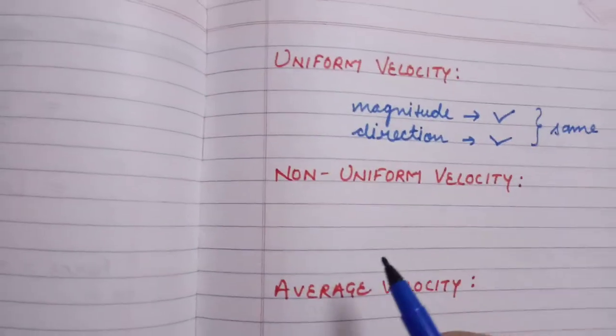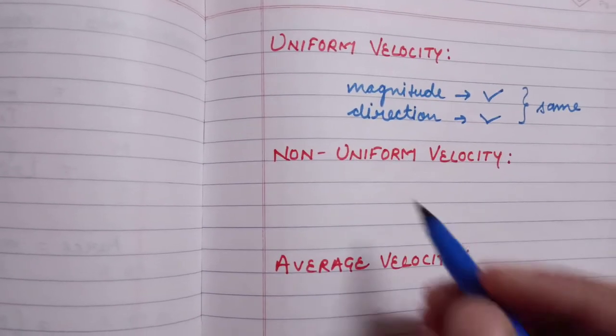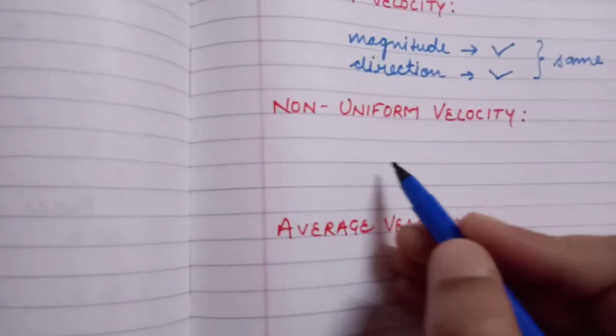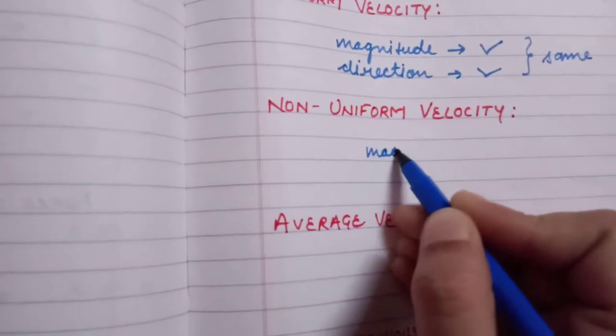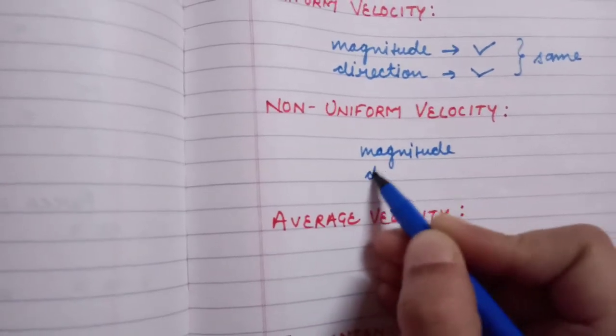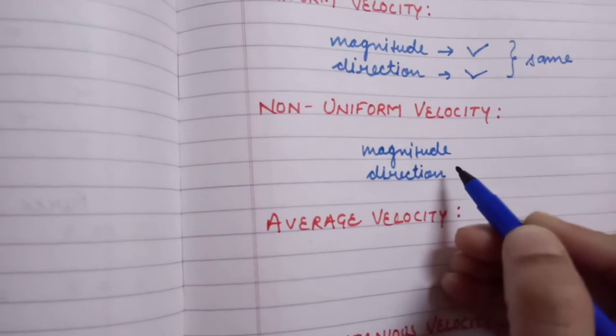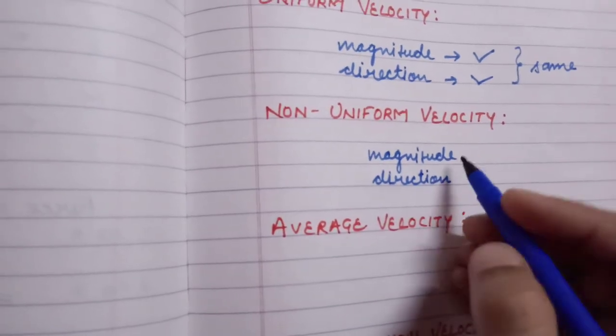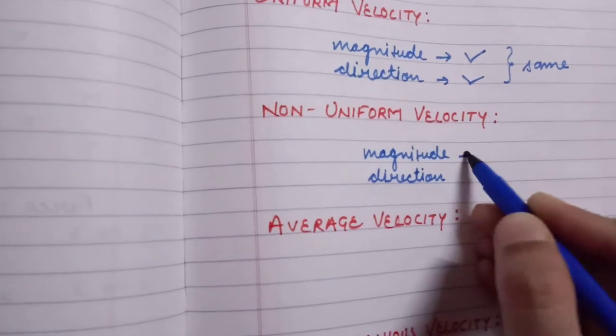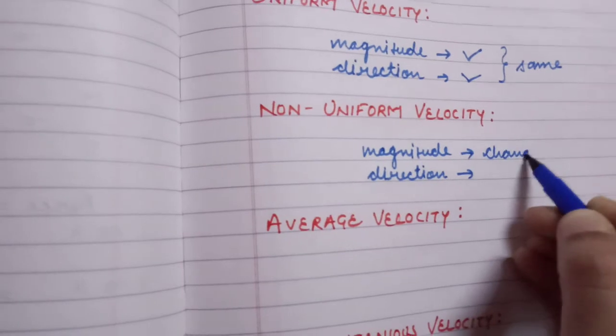A particle is said to have non-uniform velocity if either magnitude or direction of velocity changes. If any of them change or both of them change, it is called non-uniform velocity.